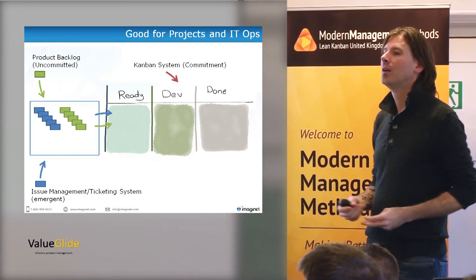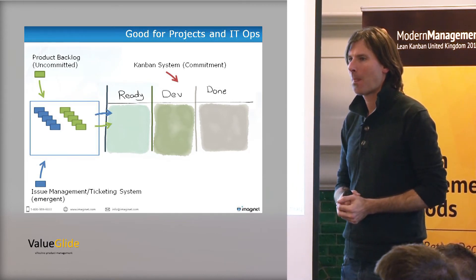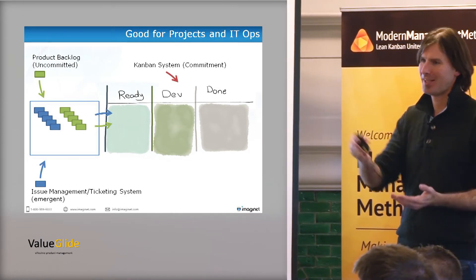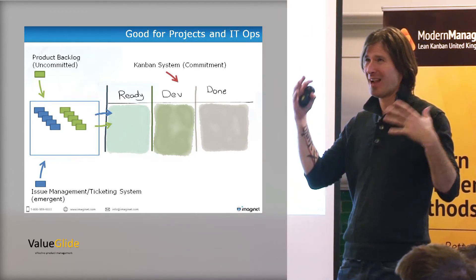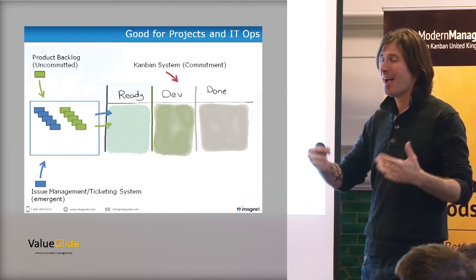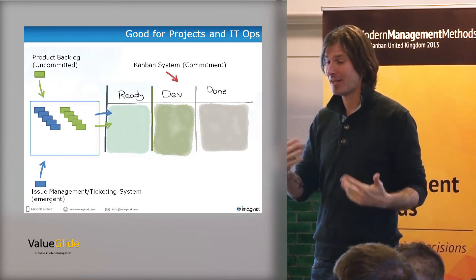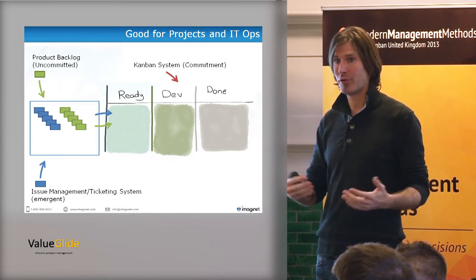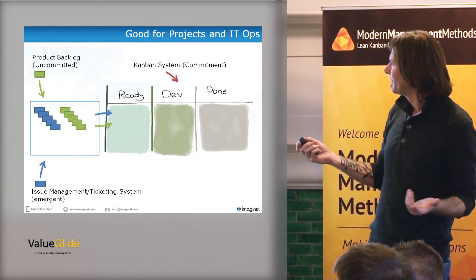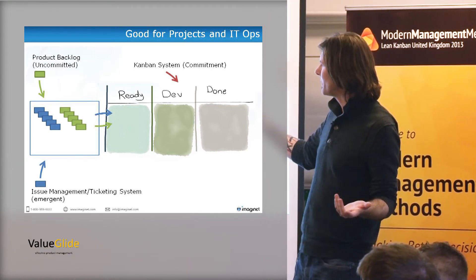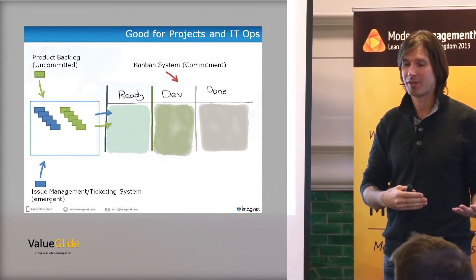Kanban actually doesn't care whether you're in a project or whether you have emergent work like IT ops. It's the fact that Scrum doesn't work for ops teams — not that Kanban doesn't work for projects. I thought Scrum advanced us so far — or had the potential to. I just think it shouldn't have been thought of as the end of our improvement. I think Kanban might be the next step.